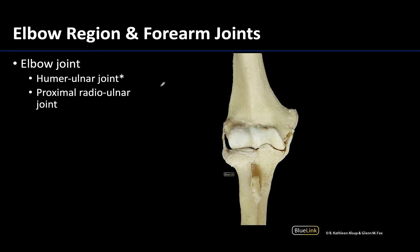Moving distally, we reach the elbow region, where you really have three joints in one region. The major joint — and the one we mean when we say elbow joint — is the humero-ulnar joint. This joint is more medially placed, with the trochlea and medial epicondyle forming the true hinge joint. Neighboring it is the humero-radial joint, which further supports the movements of the elbow joint.